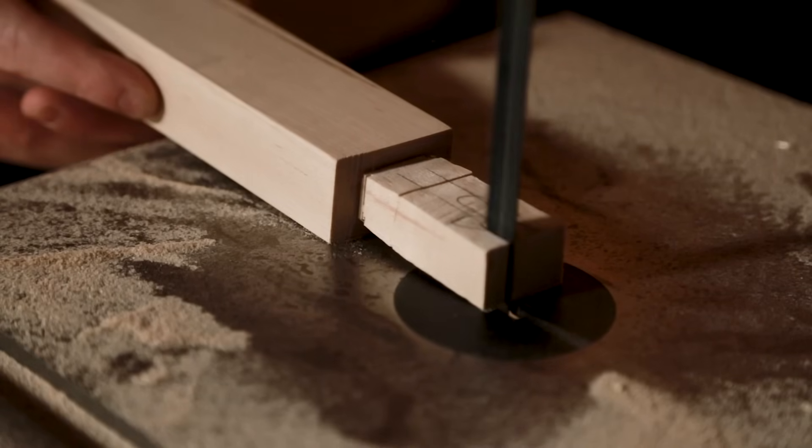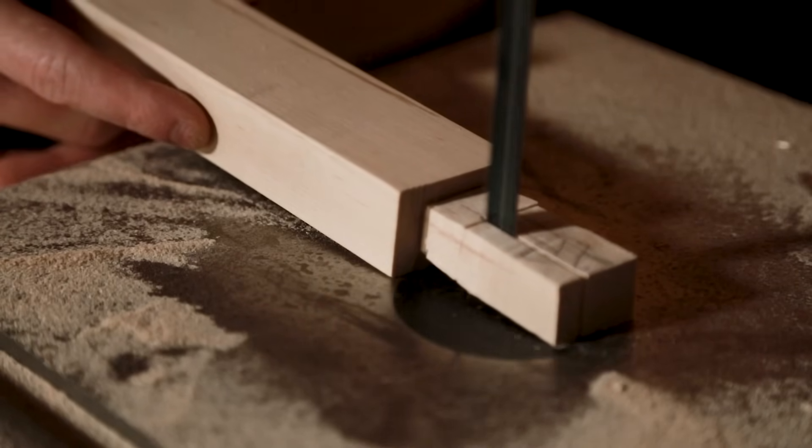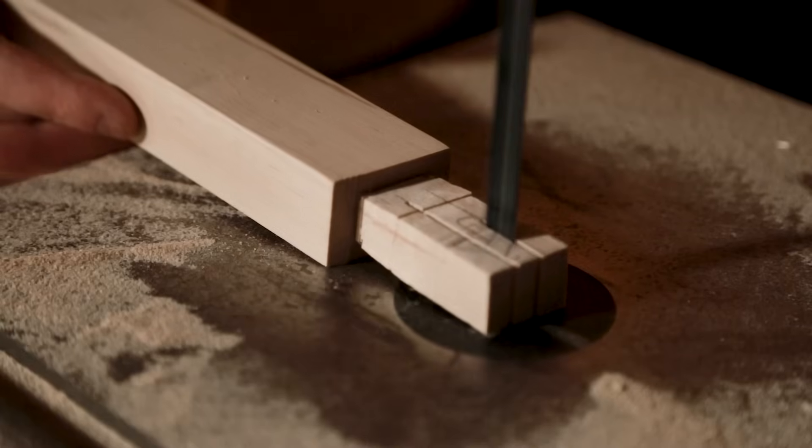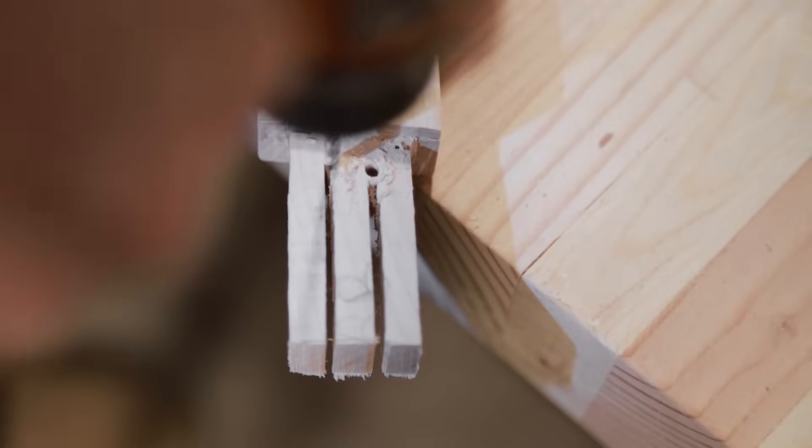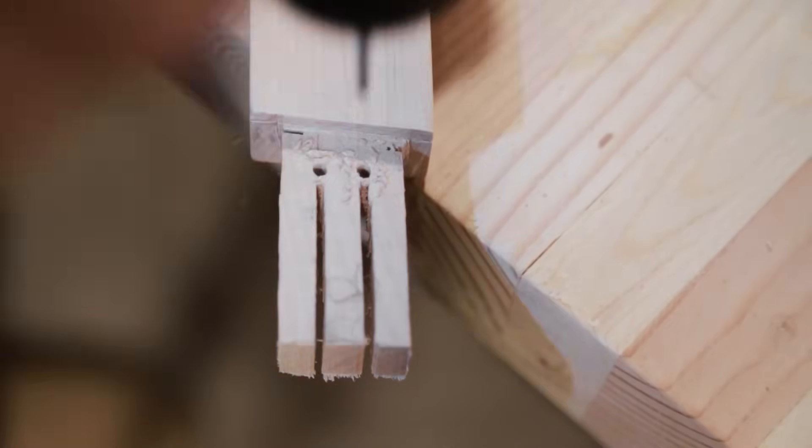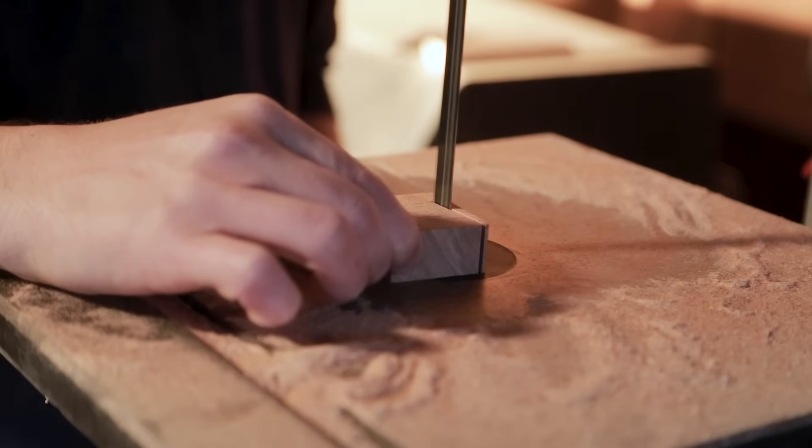The last thing to do for the tenons is to cut the slots for the wedges. I also drilled some holes to relieve some of the stress. To make the wedges I used some of the scrap cherry and sanded them until they fit.